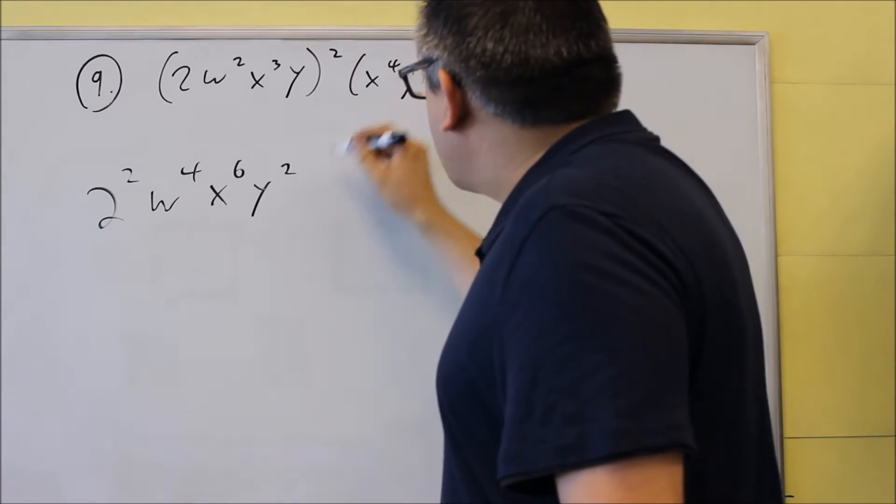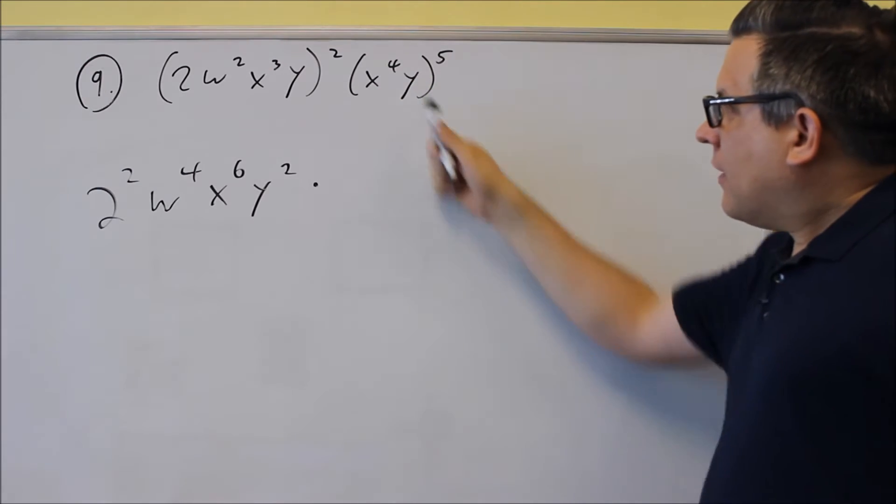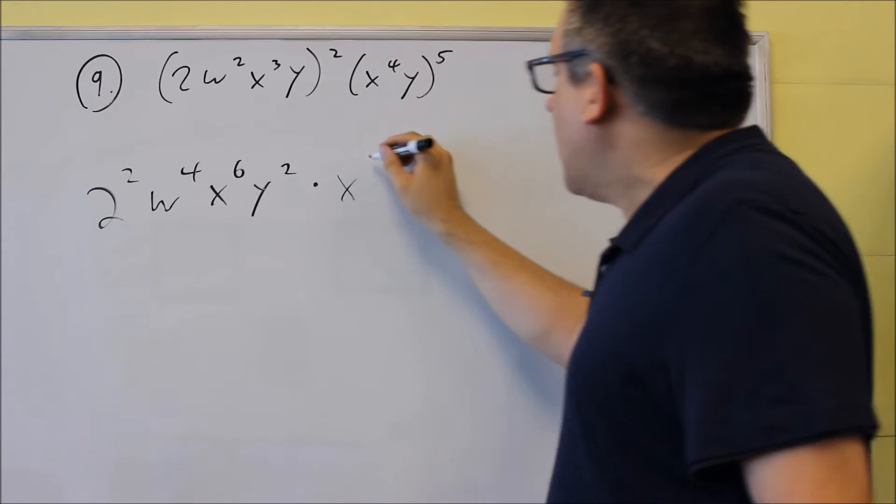Now, I also have this other part over here, so I'm going to multiply this by that one. When you raise the power to another power, you're multiplying exponents. 4 times 5 is 20.